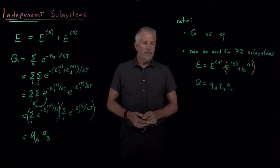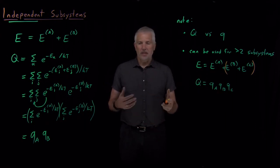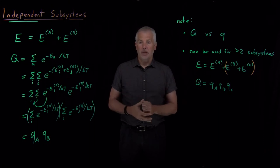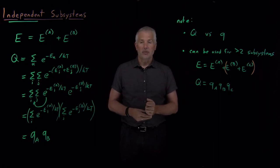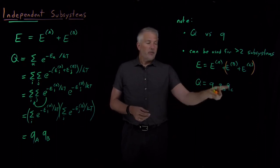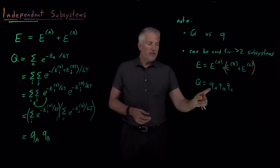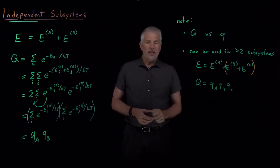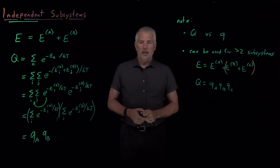This is a very useful trick when calculating the partition function for large systems — being able to calculate it in terms of smaller pieces. The most common example is a box containing multiple molecules, very often a very large number of molecules. There's an additional simplification we can make if all those molecules are identical to each other, and that's what we'll consider next.